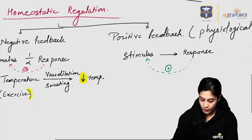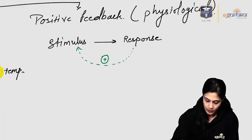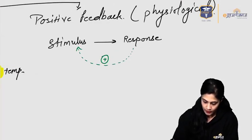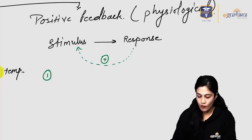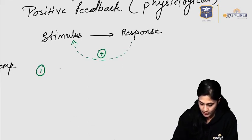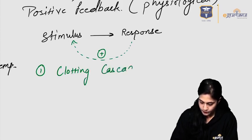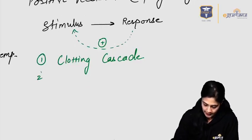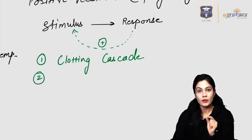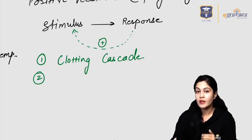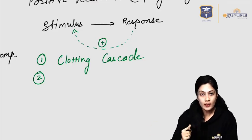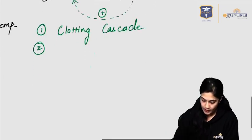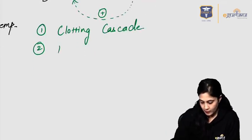Majority of mechanisms are negative feedback, but some exceptional physiological positive feedback examples exist. The first is the clotting cascade: once one clotting factor is activated, it further activates the whole clotting cascade — that is why it is called a cascade.